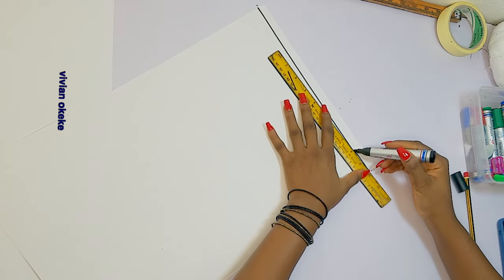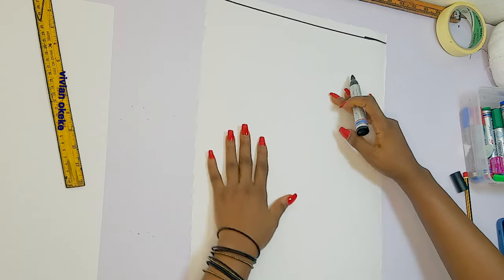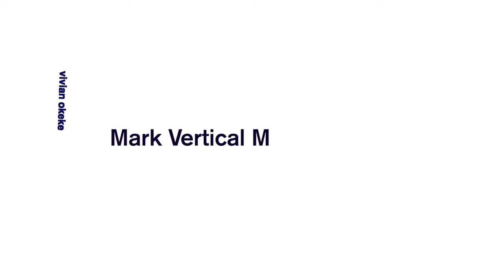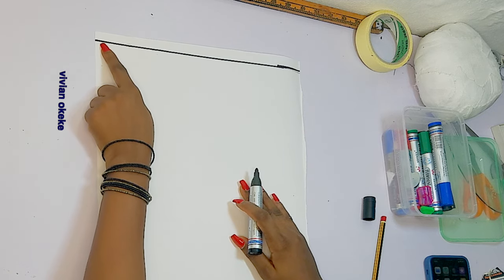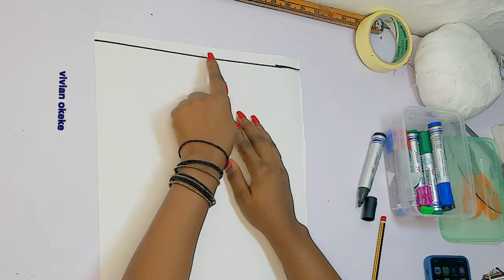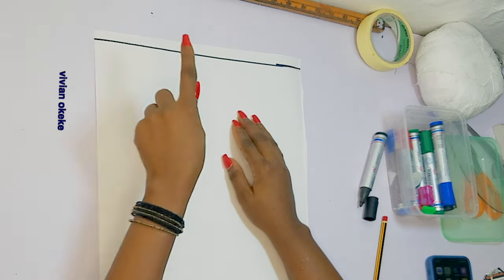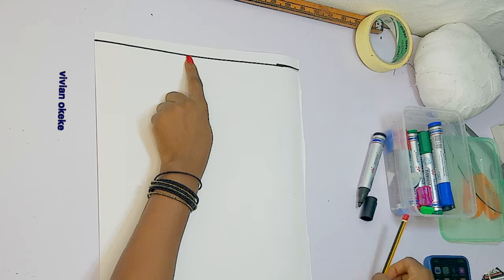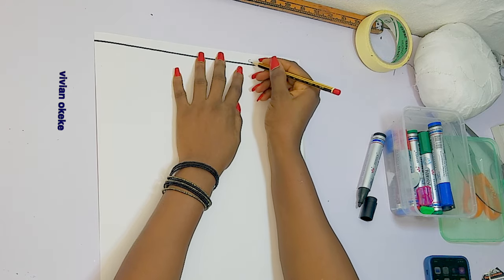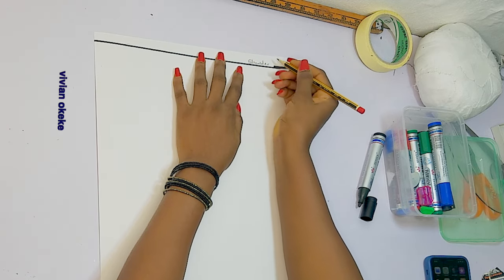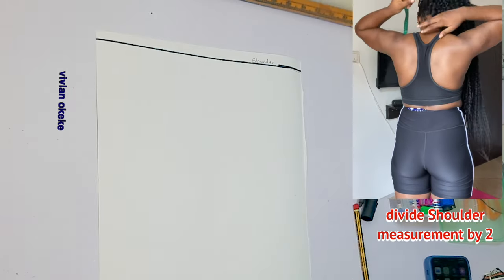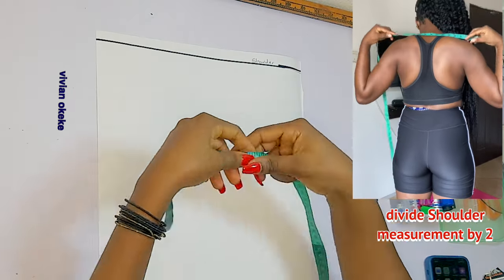This starting line is where my shoulder will sit. The next thing is to mark my vertical measurements, starting with the shoulder. I'll divide my shoulder measurement by two and mark this on the starting line — so this starting line is the shoulder. Divide your shoulder measurement by two; the measurements you need are on the screen.